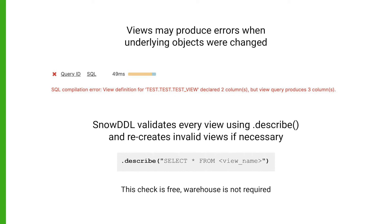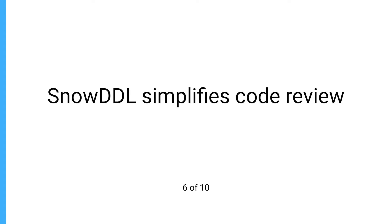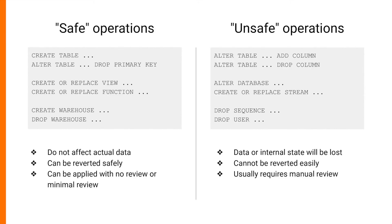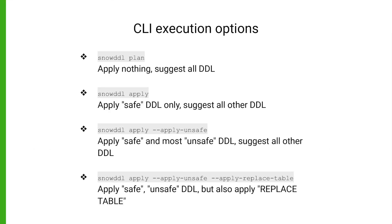This operation does not require an active warehouse and is essentially free. Snow DDL can also help you simplify code review, which is especially important if you have thousands of objects to manage. Snow DDL distinguishes between safe and unsafe operations. Safe operations are those which can be reverted safely; unsafe operations normally cannot be reverted or are dangerous. When you launch Snow DDL, you decide which operations should be applied and which should only be suggested. Suggested operations are simply output to standard output so you can review and apply them manually if you want.